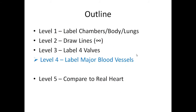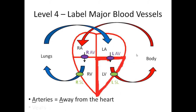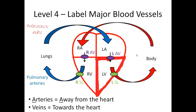This is the last level before practice questions — level four, the major blood vessels. When you hear arteries and veins, remember: A for arteries, A for away from the heart. Arteries pump blood away from the heart; veins bring blood back to the heart. Pulmonary arteries are the ones going to the lungs, away from the heart, and pulmonary veins are the ones coming back. You'll see the difference in color in a moment.